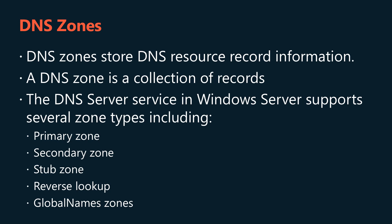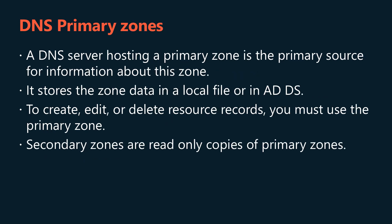These zone types include primary, secondary, stub, reverse and global name zones. A DNS server hosting a primary zone is the primary source for information about this zone. It stores the zone data in a local file or in ADDS. To create, edit or delete resource records you must use the primary zone.